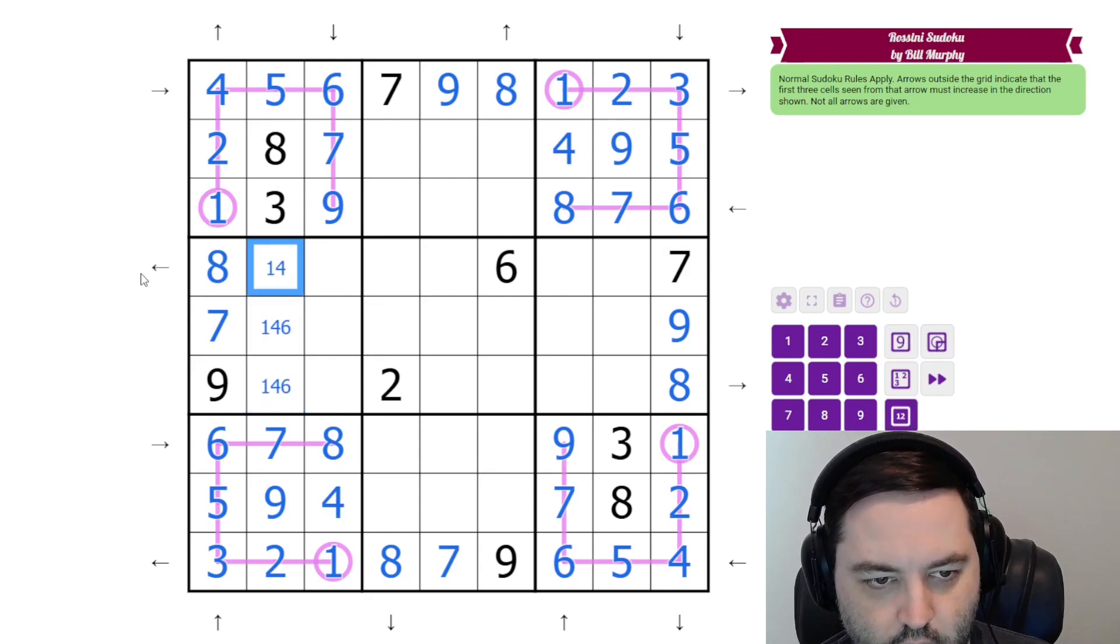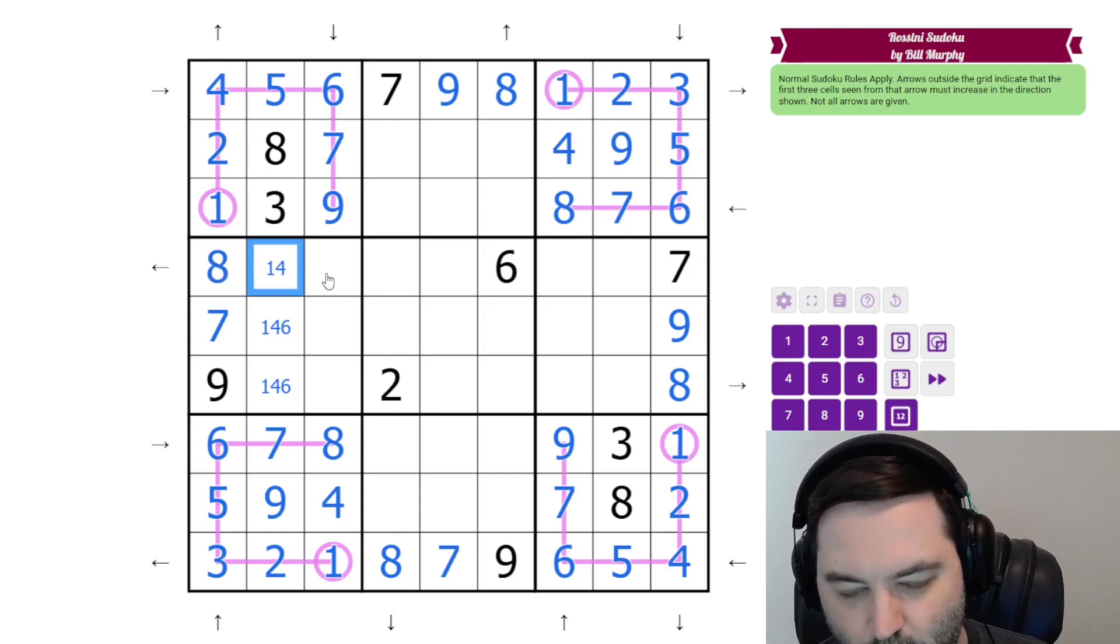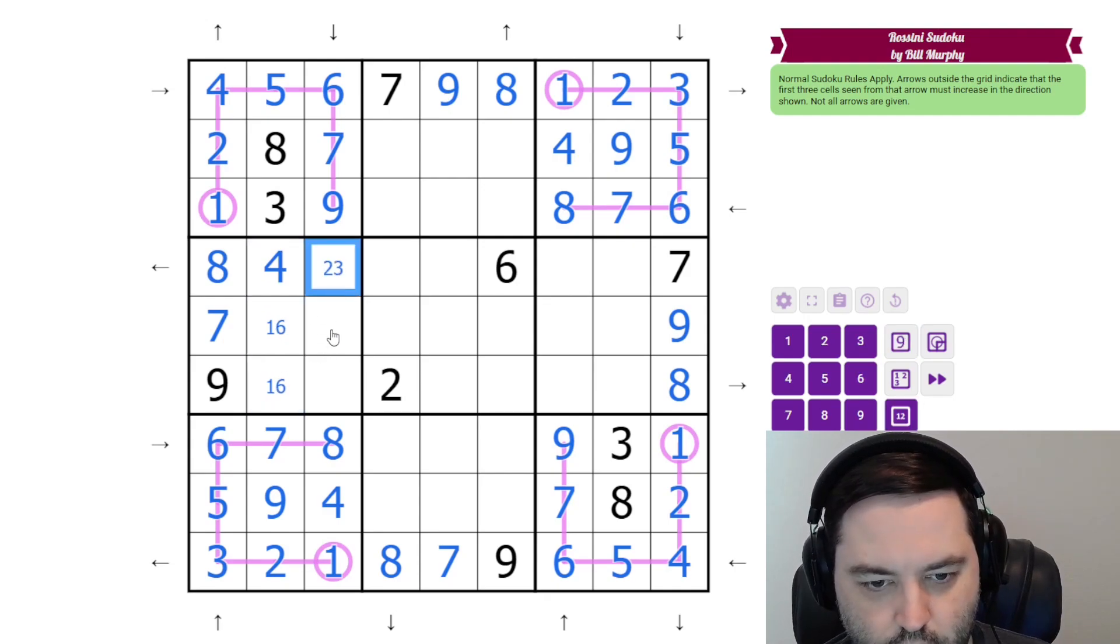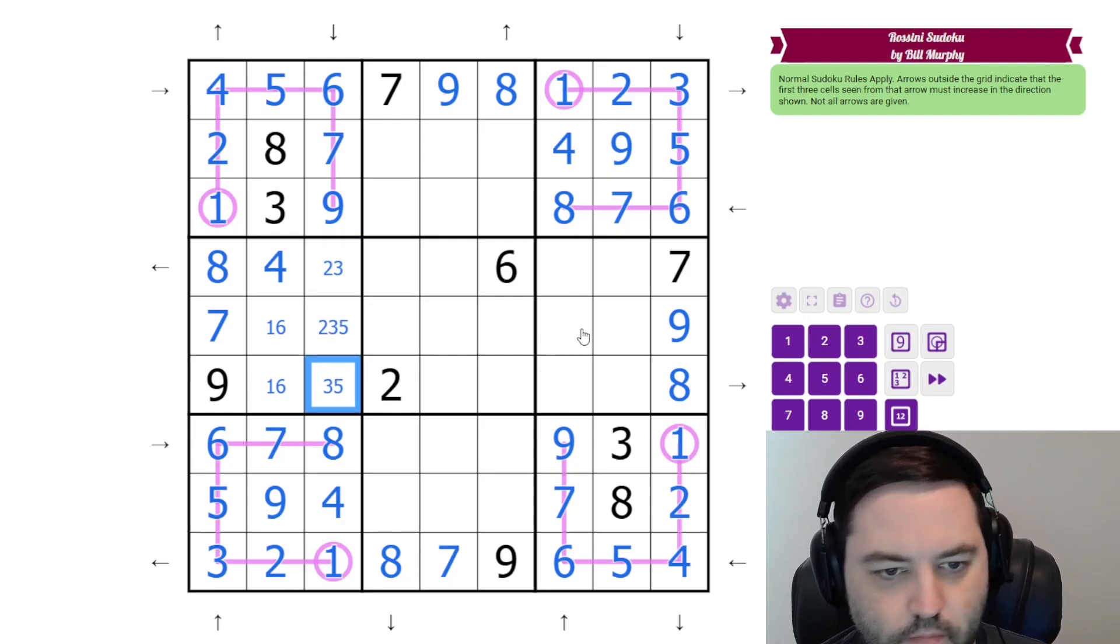And this arrow tells us we're increasing in this direction. So we can't have a one in the middle. That's a four. And this has to be less than four, so it's two or three. These are two, three, or five, and that's not two.